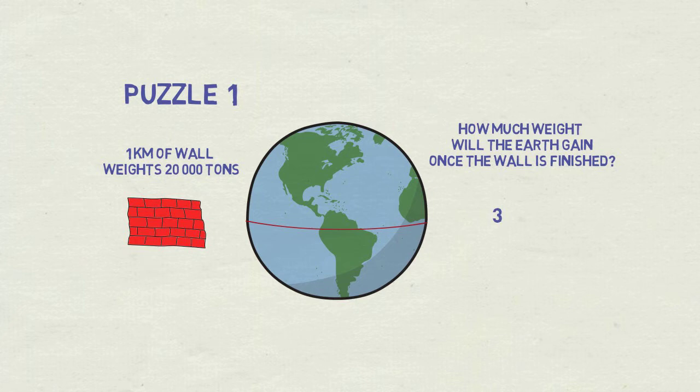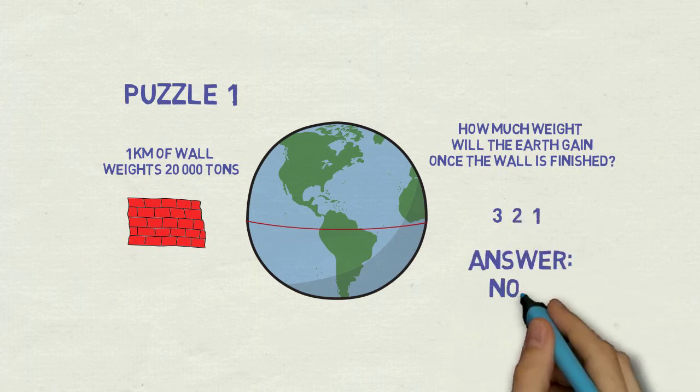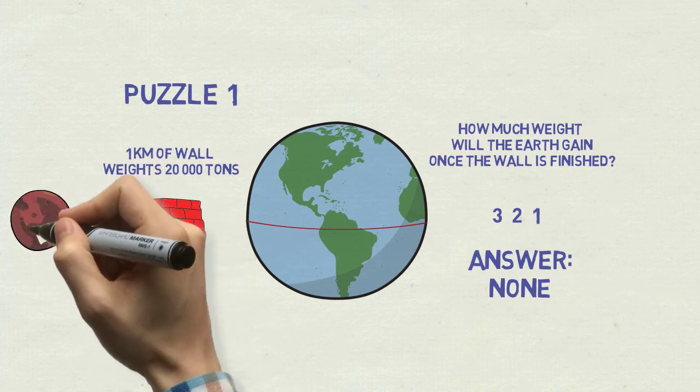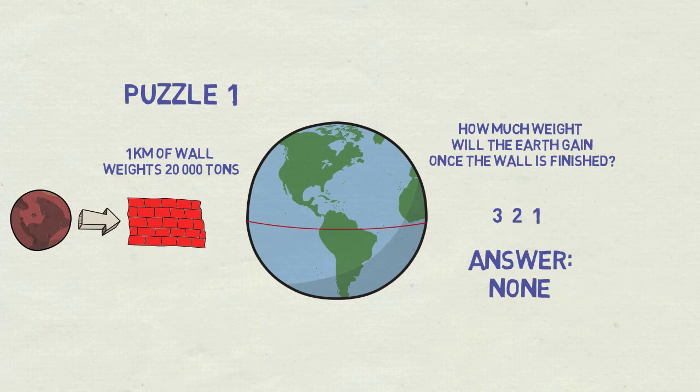Ready? Three, two, one. The answer is none. Building the wall only moves some material from one place to another, but it will not change the total mass of the planet. For any change, the material would need to be taken from asteroids, for example. This was a bit deceptive one and I fell for it myself.